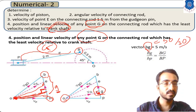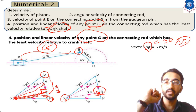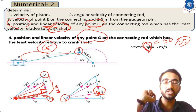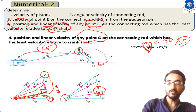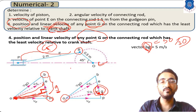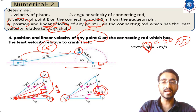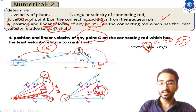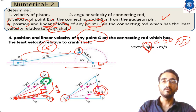Now we need to plot the position of G on the configuration diagram. The procedure here is the reverse of what we did for point E in part 3. For point E, we used the 1.5 meter length on the configuration diagram to locate E on the velocity diagram. Now we already have point G on the velocity diagram and need to find its physical position on the connecting rod.